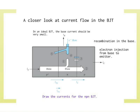Make sure you're clear on the logic of how current is distributed in a BJT, because next week we'll do the math — it gets complicated. Now let's try to do a simplified quantitative analysis going forward.